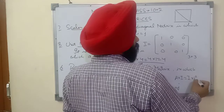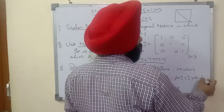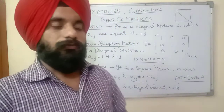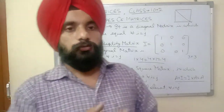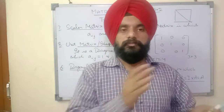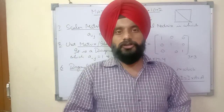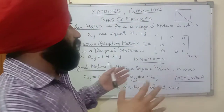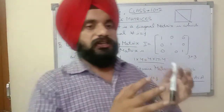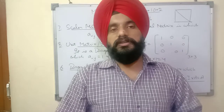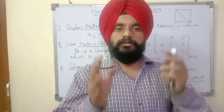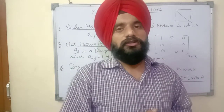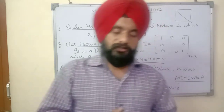Just as multiplying any number by 1 gives the same number, similarly multiplying any matrix by the identity matrix gives the same matrix. We will understand this more when we study how to multiply two matrices. In this video we have learned eight types of matrices. Thank you so much.